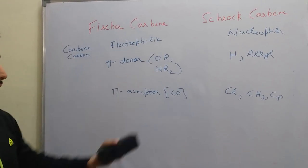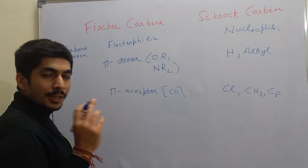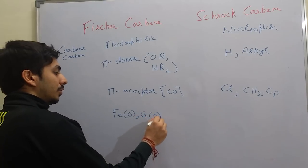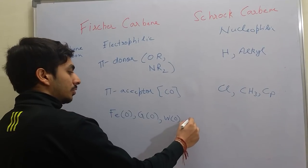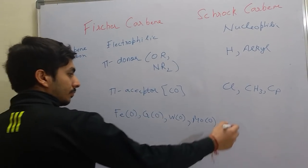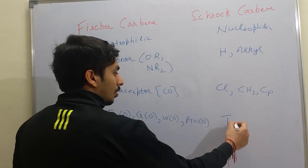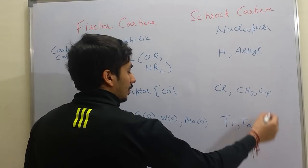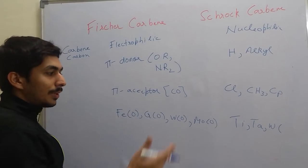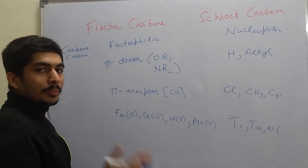Any of these non-pi-acceptor groups will lead to the formation of Schrock Carbenes. Regarding the nature of the metal: in Fischer Carbenes, the metal is a middle or late transition metal in low oxidation state — for example, iron(0), chromium(0), tungsten(0), or molybdenum(0). In Schrock Carbenes, the metals are early transition metals in high oxidation state, such as titanium, tantalum, or tungsten(IV).